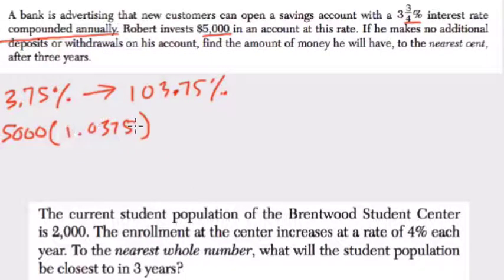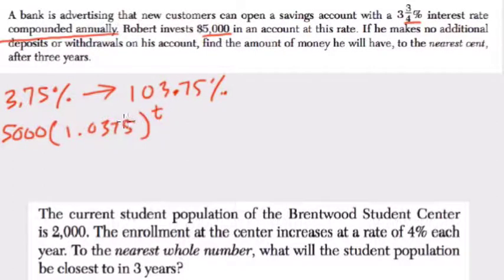The next year we do it again, and the next year we do it again and again. So for t years, that's our exponent — we do 5,000 times 1.0375 to the t power.